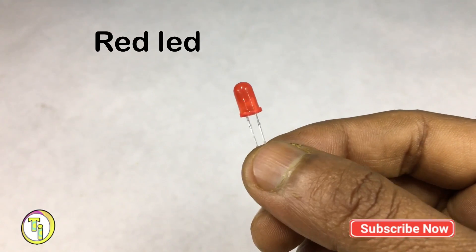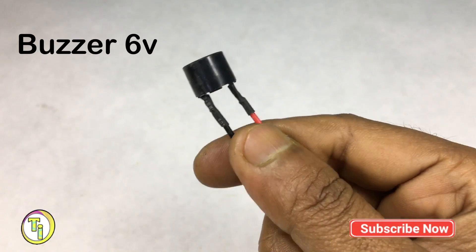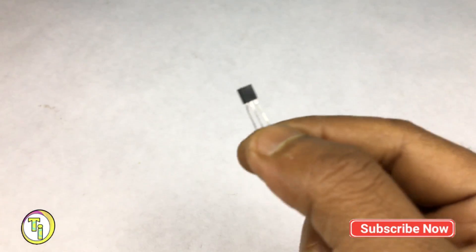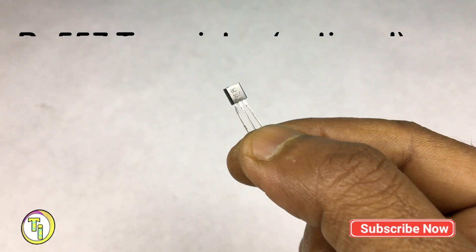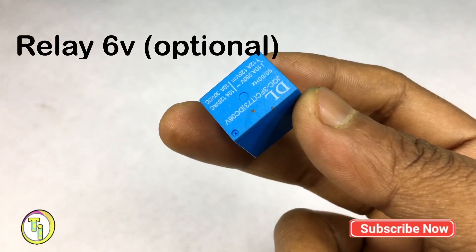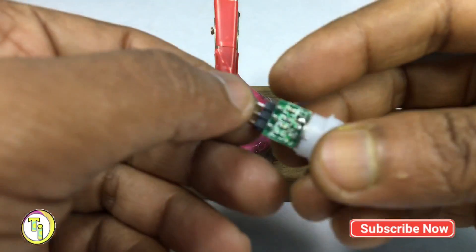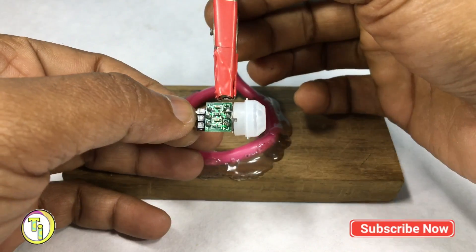One LED, 6 volt buzzer, BC557 transistor, and one 6 volt relay. Now let's start the project.